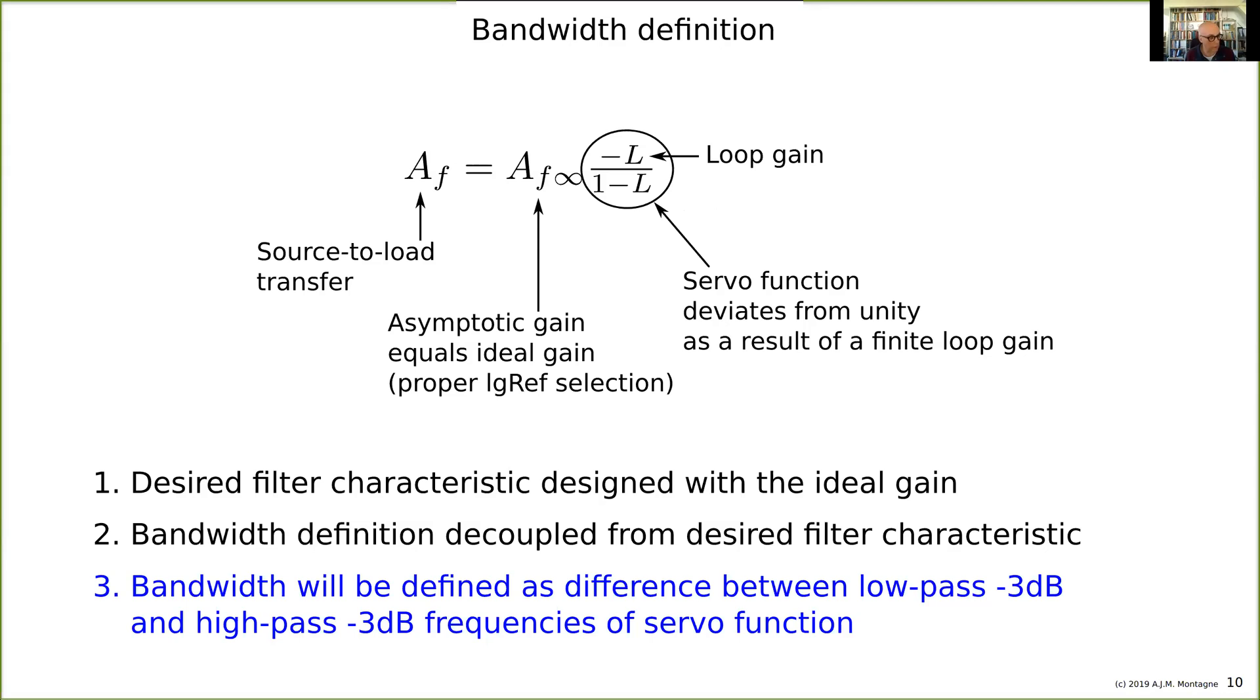So we will define the bandwidth as a difference between the low-pass -3dB and the high-pass -3dB frequencies of the servo function. And in this way, and that is very important, the bandwidth is decoupled from the desired frequency characteristics that has been designed in the ideal gain.